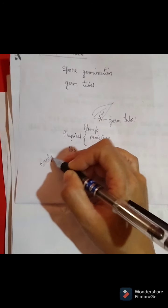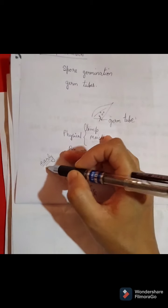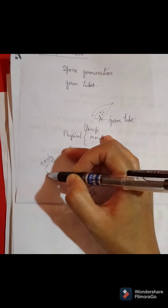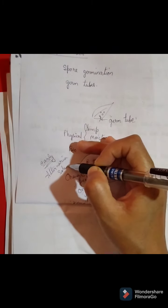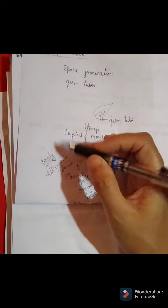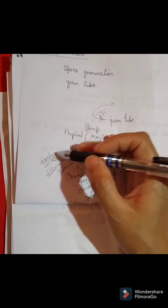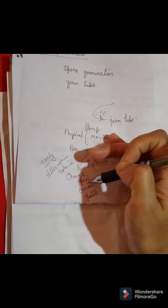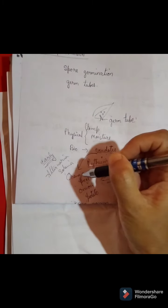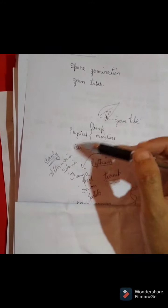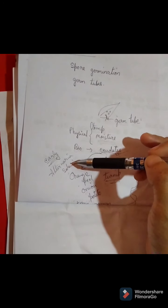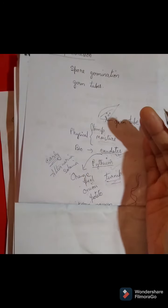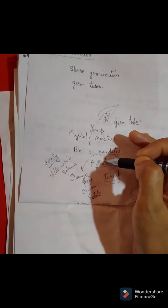You have already studied early blight disease. Early blight is caused by Alternaria solani, which causes early blight in tomato, potato, and solanaceous crops, but not in other crops. This is because all these factors influence the growth or spore formation of these pathogens, so it depends from plant species to plant species and on all these factors.